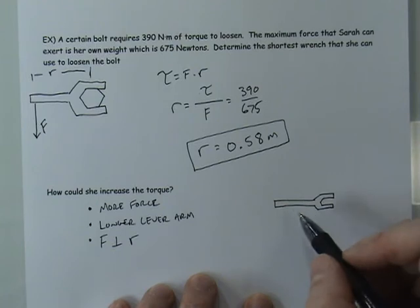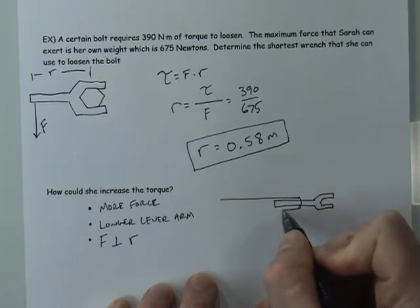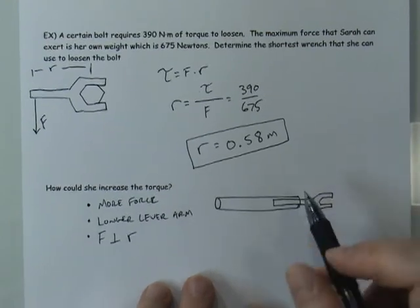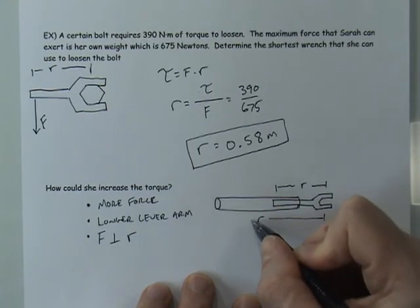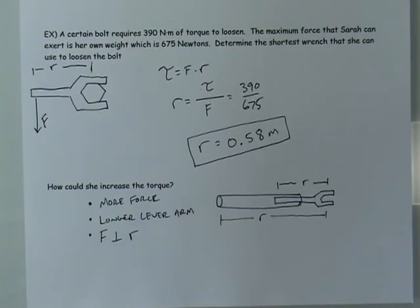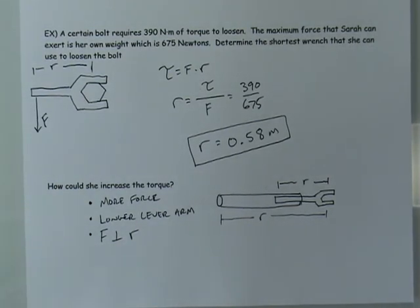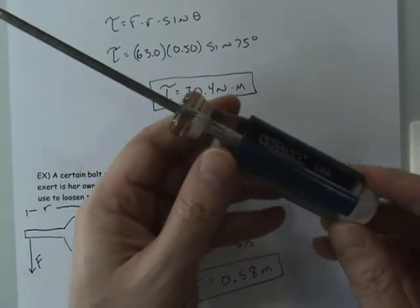If you take a pipe and slide it over the wrench handle, the effective lever arm r becomes much longer. Instead of the original wrench length you now have the wrench plus the pipe, which can be three or four feet long. This can give you five or six times the torque you'd get from the wrench alone. This technique is especially useful for corroded fittings such as those on a sewer line that haven't been opened in a long time.